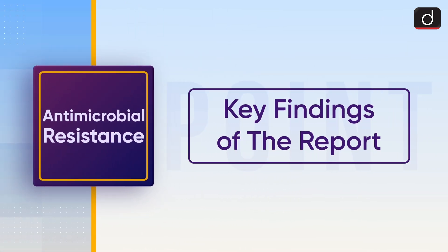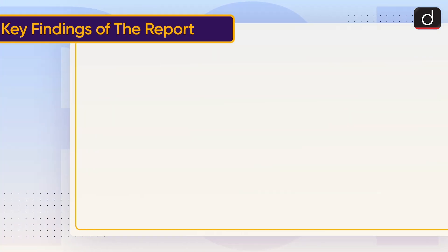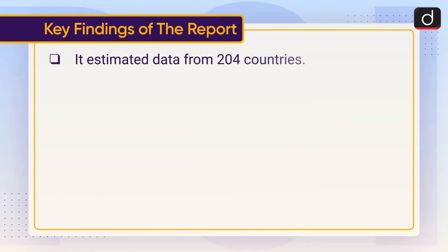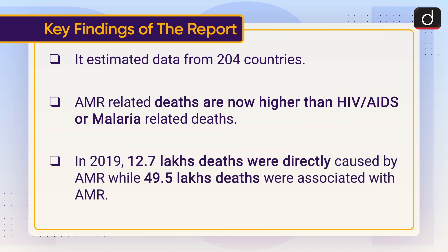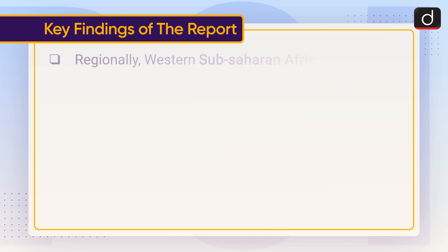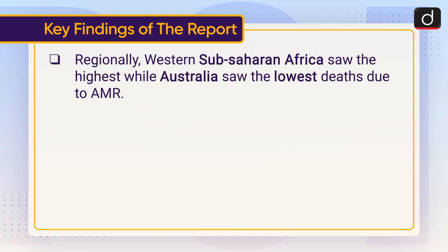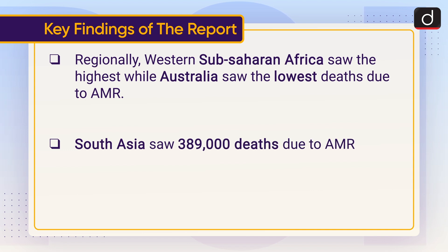Now let's discuss the key findings of the report. It estimated data from 204 countries. AMR-related deaths are now higher than HIV/AIDS or malaria-related deaths. In 2019, 1.27 lakh deaths were directly caused by AMR, while 49.5 lakh deaths were associated with AMR. Regionally, West Sub-Saharan Africa saw the highest deaths, while Australia saw the lowest deaths due to AMR. South Asia saw 389,000 deaths due to AMR.